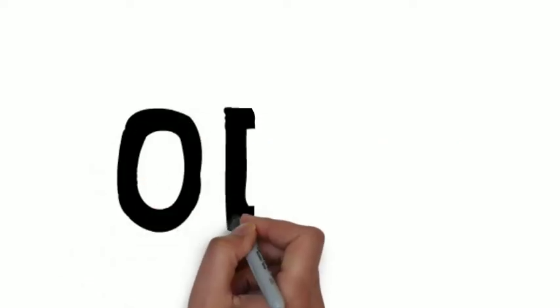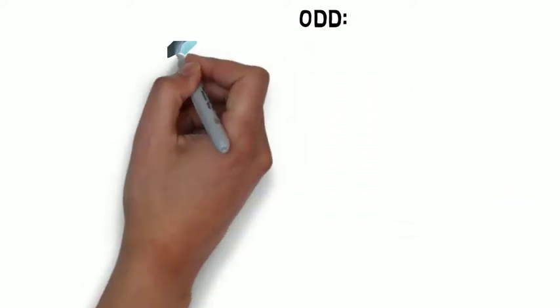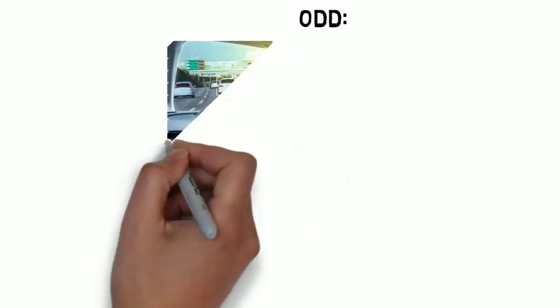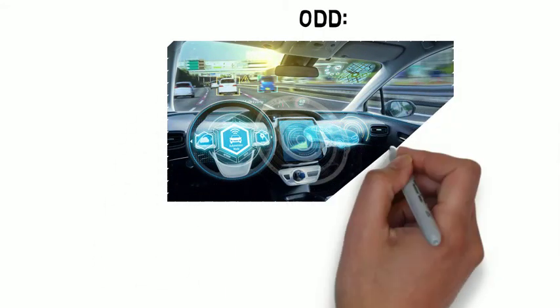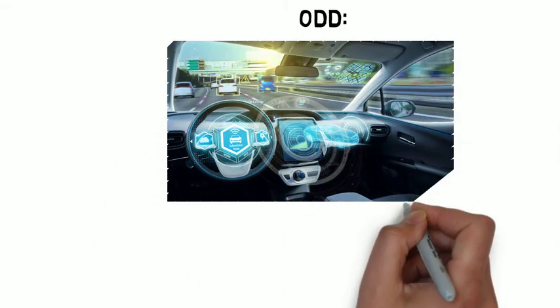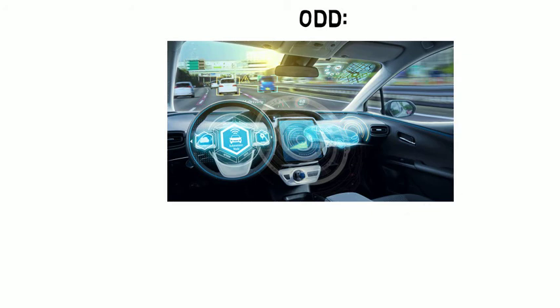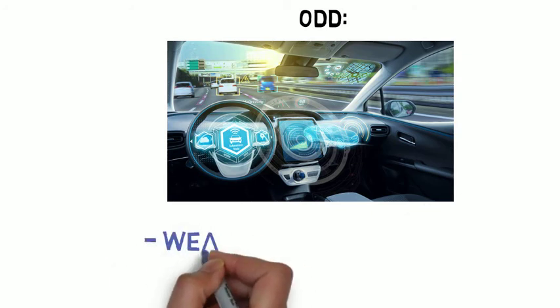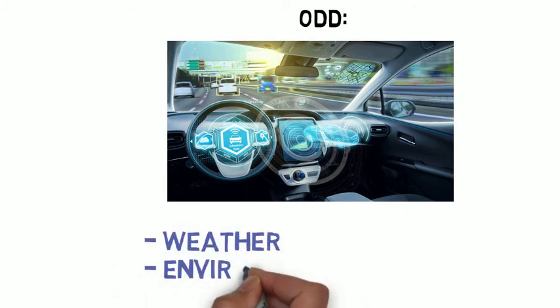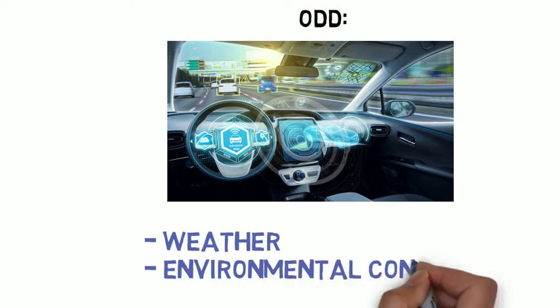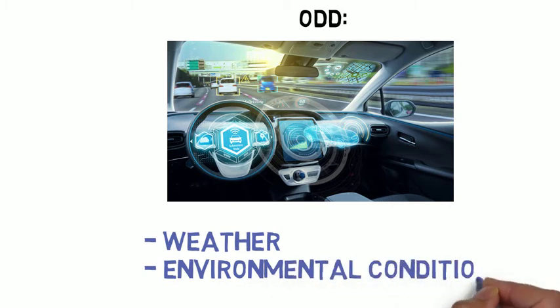In operational design domain (ODD), it refers to the environment — including location, weather, and speeds — in which the self-driving vehicle is designed to operate. The vehicle must be able to operate in any weather or environmental condition, irrespective of the location where the vehicle is. It is a state that autonomous vehicles haven't reached yet.